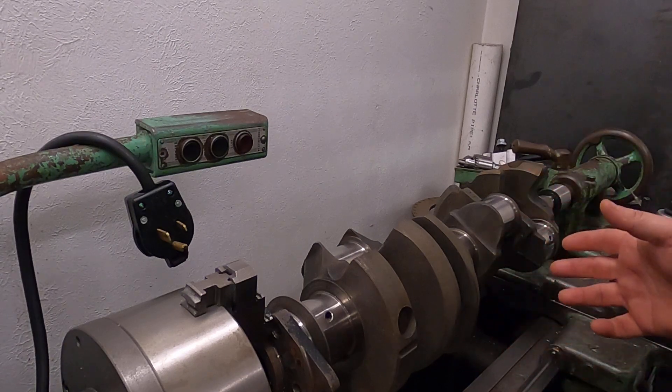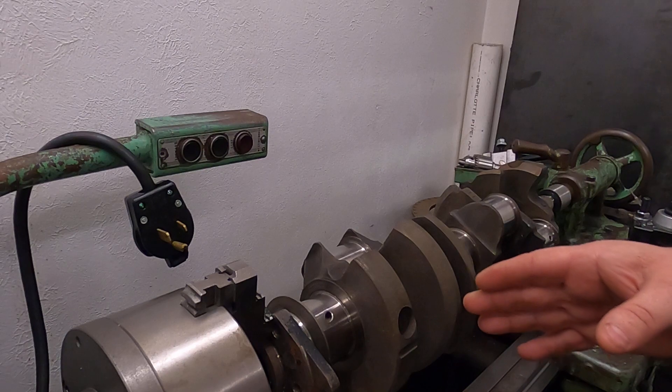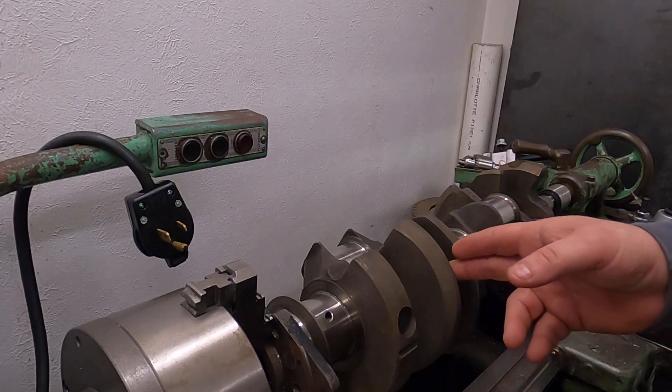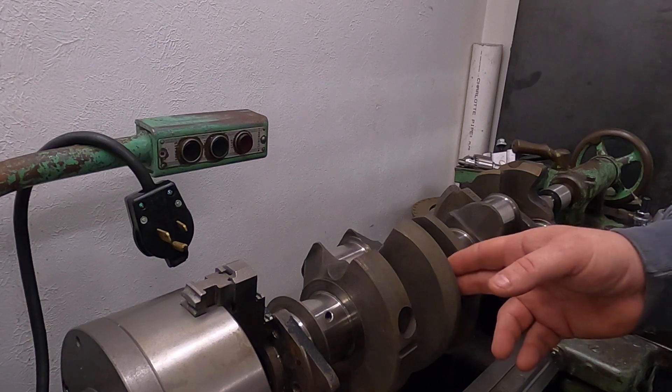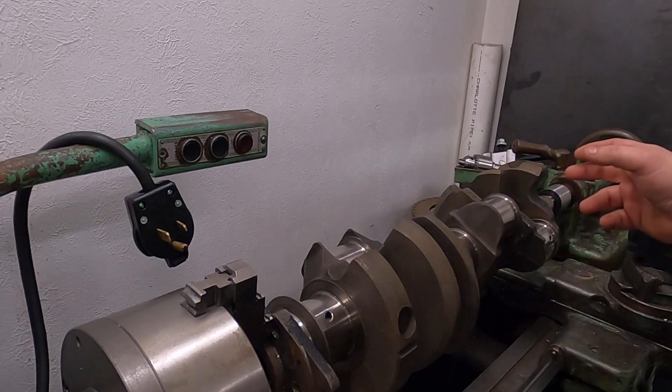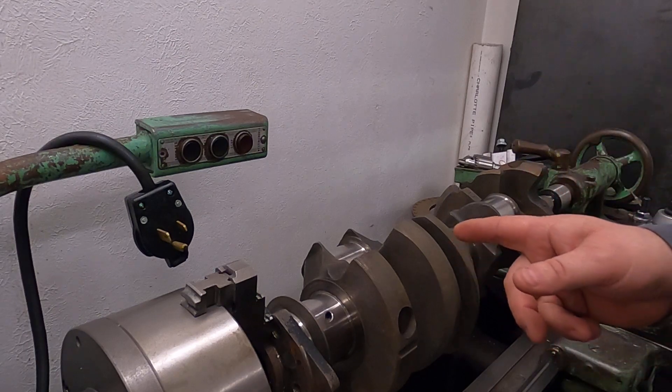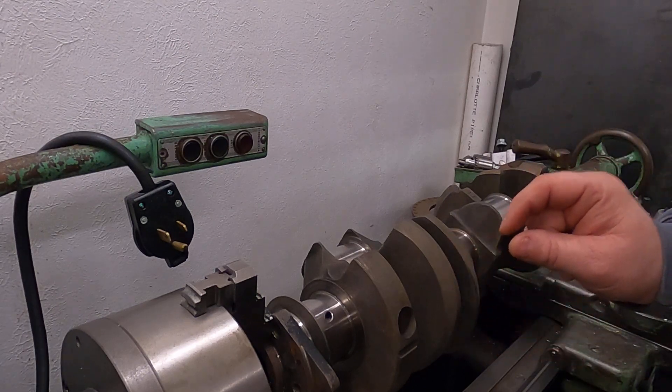So let's just say that this number four ends up being a couple tenths tighter than number one. If I take those shells out and I notice that these shells are a couple tenths thicker, which would in turn make this oil clearance tighter...